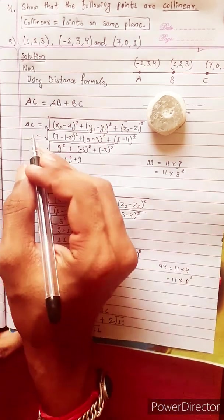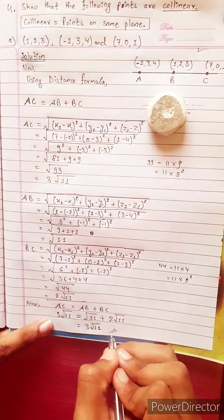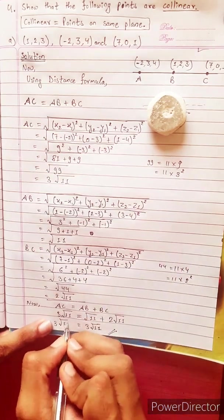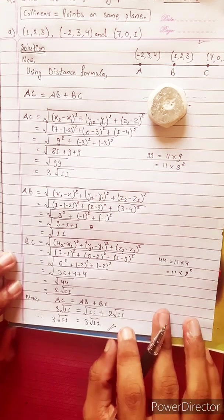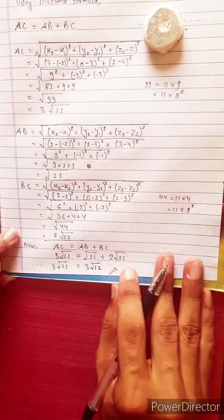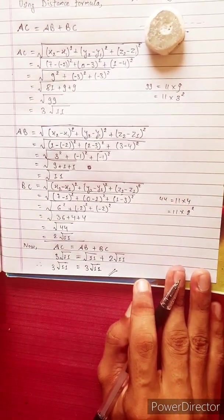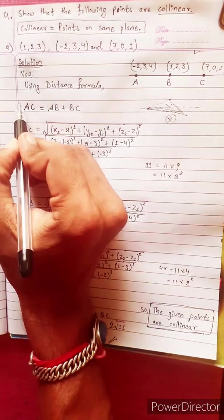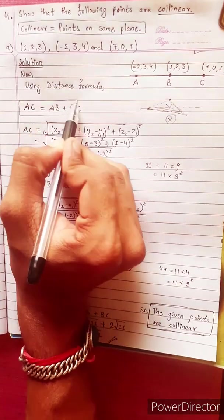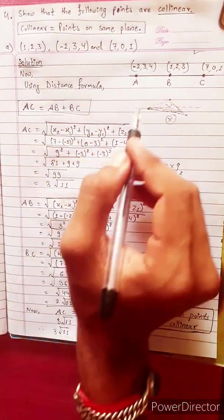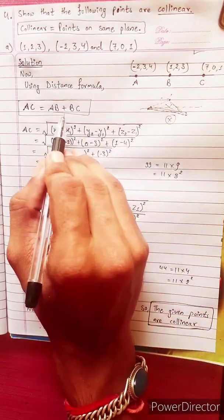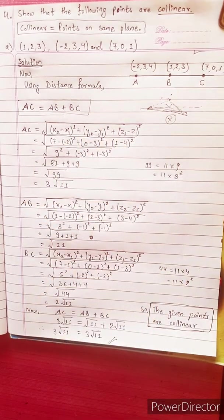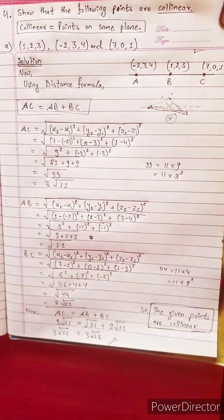So AC equals AB plus BC is proved: 3 under root 11 equals 3 under root 11. Therefore the collinearity condition is satisfied, and these points are collinear. Thank you.